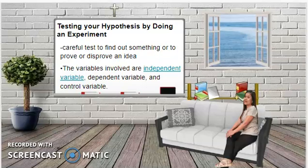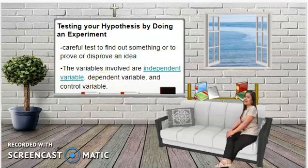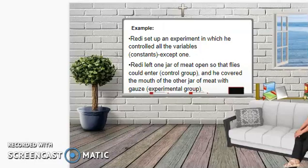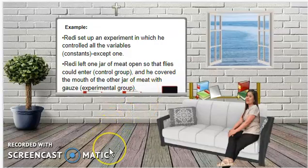Step four is testing your hypothesis by doing an experiment — a careful test to prove or disprove an idea. The variables involved are: independent variable, the factor changed by the researcher; dependent variable, the factor that we measure; and control variables, the variables that are held constant. Redi set up an experiment controlling all variables except one. He left one jar of meat open so flies could enter — that was the control group — and covered the other jar with gauze — that was the experimental group.